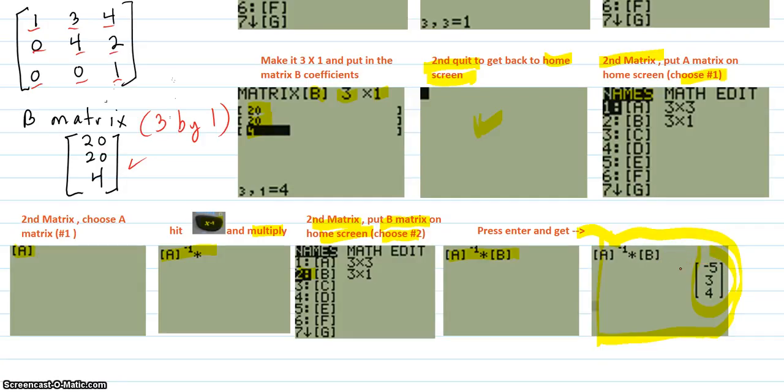And you get this screen here, which has the solution matrix right there, and that's X equals negative 5, Y equals 3, and Z equals 4.